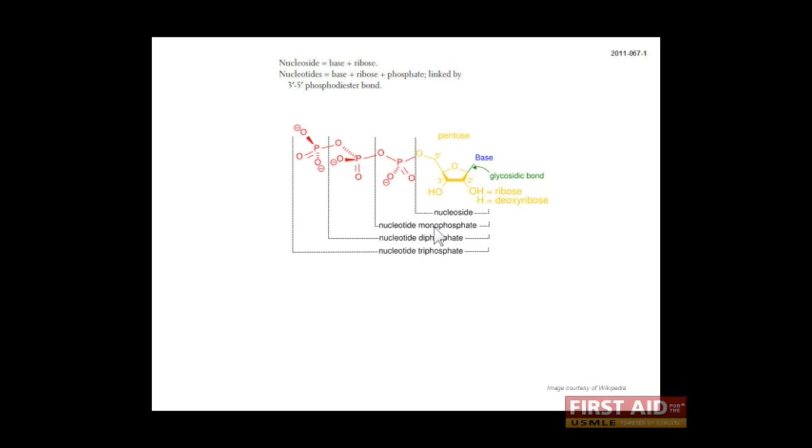Now let's talk about some nomenclature that you should be familiar with. A nucleoside is a base, either A, G, C, U, or T, connected to a ribose sugar, as is the case with RNA, or a deoxyribose sugar, as is the case with DNA.